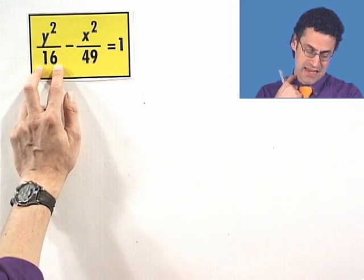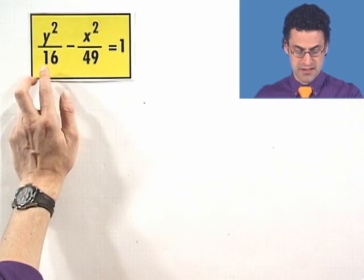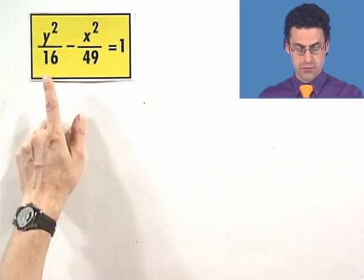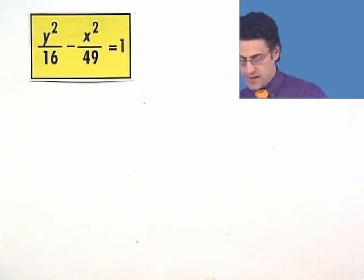And so what that tells me is that in fact my vertices are going to be at 0, 4 and negative 4. Now, that gets us going.